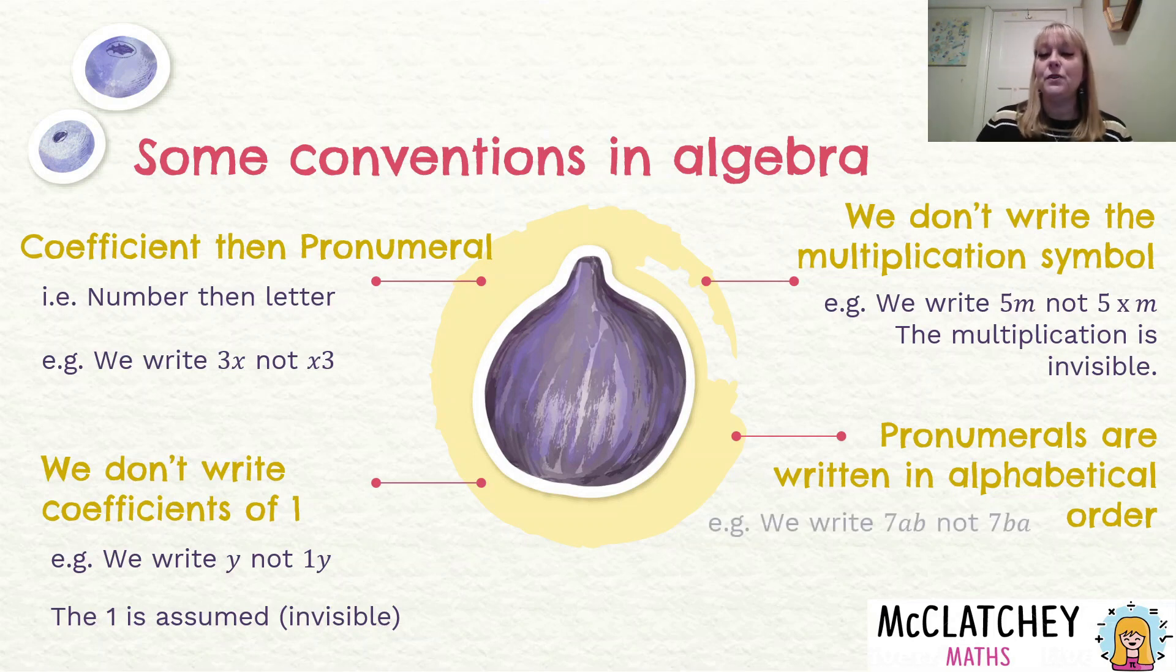The last convention I'm going to talk about today is that our pronumerals or our letters are all written in alphabetical order. So we would typically write 7ab, not 7ba. Now, once again, you're still not wrong if you write 7ba. It's just the tradition to do it in alphabetical order. That's important to know your alphabet.